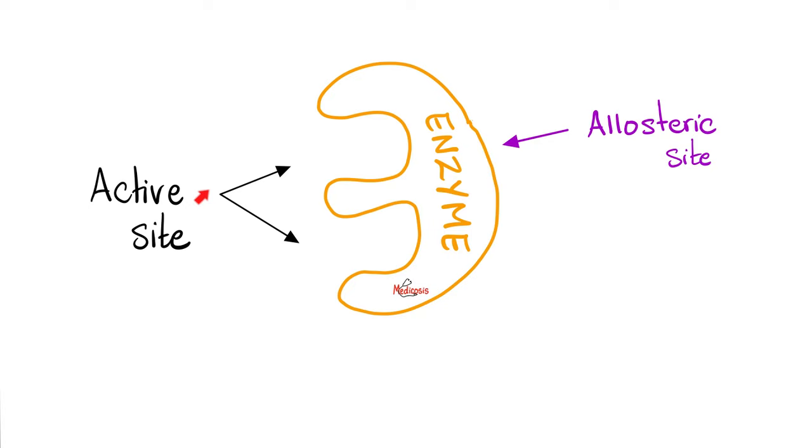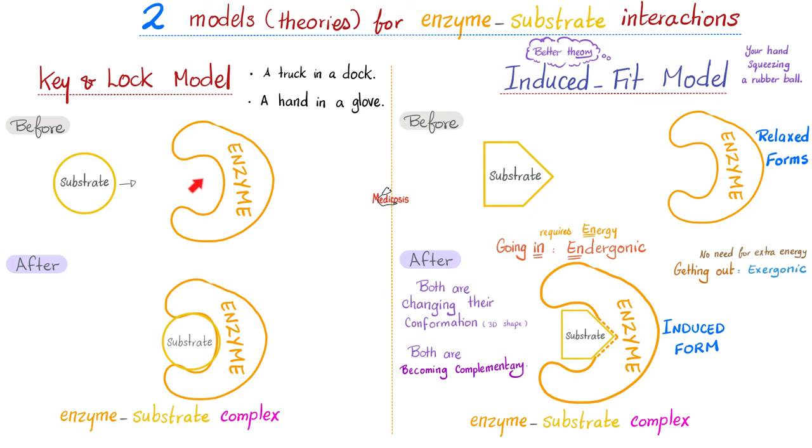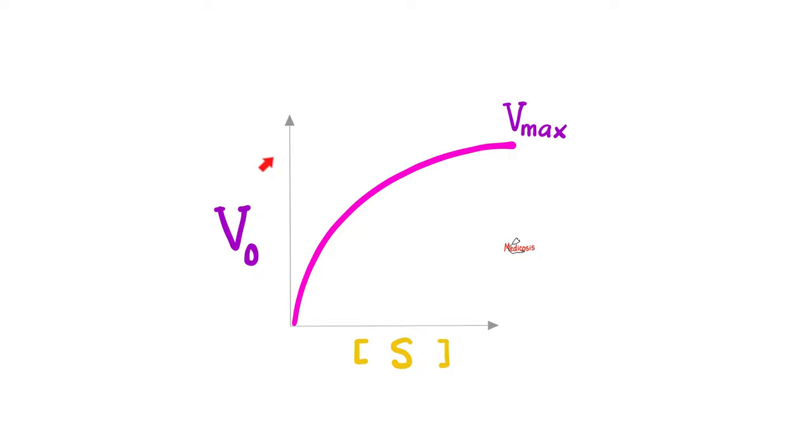This is the active site, which is the front door. But this is the back door or allosteric site. Who's going to occupy the active site of the enzyme? The answer is the substrate. When the substrate binds the enzyme, they make an enzyme substrate complex. They literally hug each other. And we discussed the two models for enzyme-substrate interaction. The old one is the key in a lock, a truck in a dock, a hand in a glove, which is not very accurate. The more accurate one is the induced fit model. When they hug each other, the substrate is going to change the active site of the enzyme, and the active site will change the substrate shape.